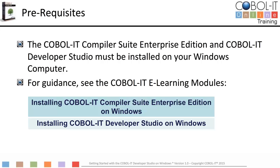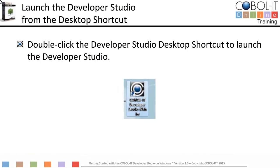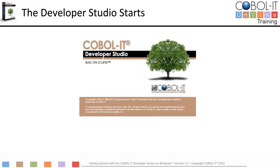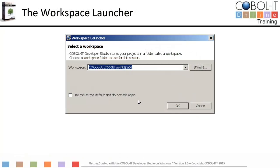Let's proceed to launch the software from the desktop icon. Locate the shortcut on your desktop and click on it to launch the software. After launching, you will see a splash screen for a few seconds. After the COBOL IT splash screen closes, you will see the workspace launcher window.